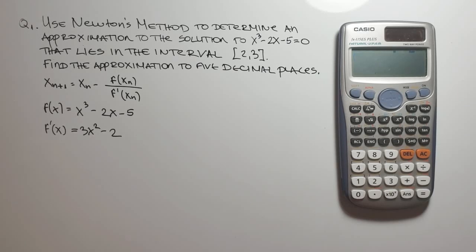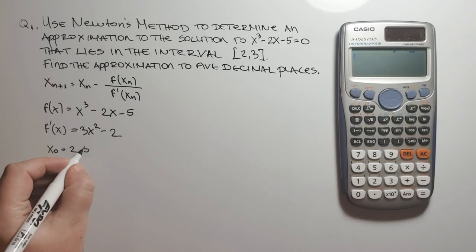Now in this problem we are not given a starting value but we are given an interval in which the root exists. So we may as well use the midpoint of this interval as our starting value. So x sub 0 equals 2.5.